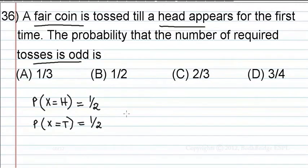He will toss the coin till he gets the head, but he's asking what is the probability that the number of required tosses is odd. First time if he throws, he may get head. Then he wins. That is what he wants, odd number of times.